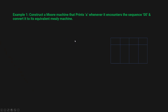So let's say we are given this problem: you have to construct a Moore machine that prints 'A' whenever it encounters the sequence '00', and convert it into an equivalent Mealy machine.